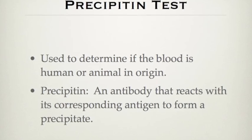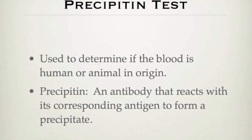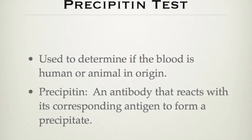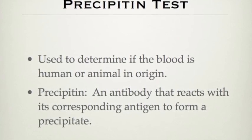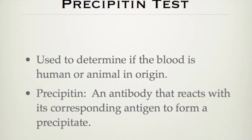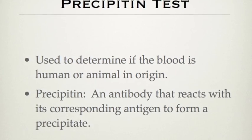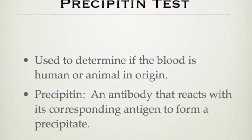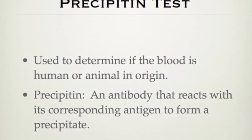The precipitin test is used to determine if the blood is human or animal in origin. The precipitin is an antibody that reacts with its corresponding antigen to form a precipitate.